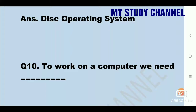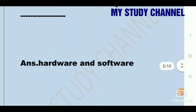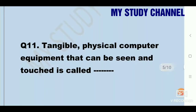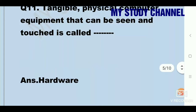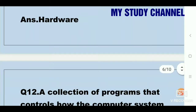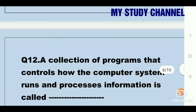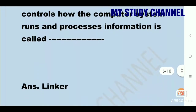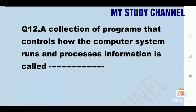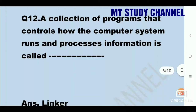To work on a computer we need dash. Answer is hardware and software. Next question: tangible physical computer equipment that can be seen and touched is called dash. Answer is hardware. Next question: a collection of programs that controls how the computer system runs and processes information is called dash. Answer is linker.